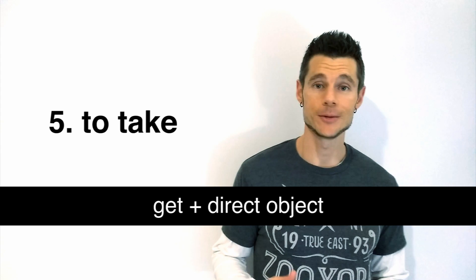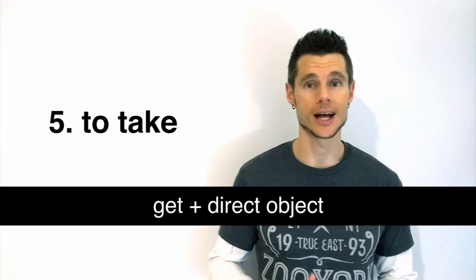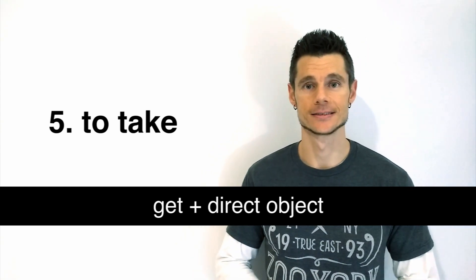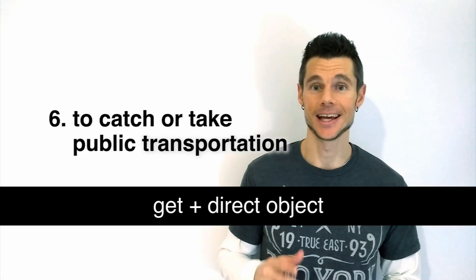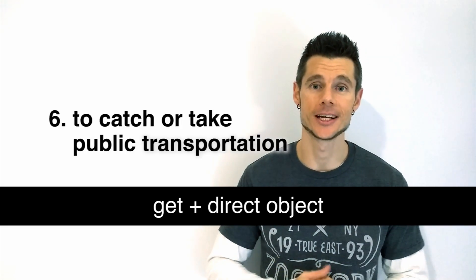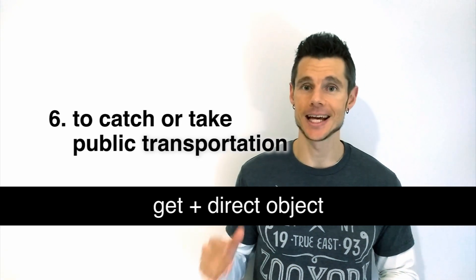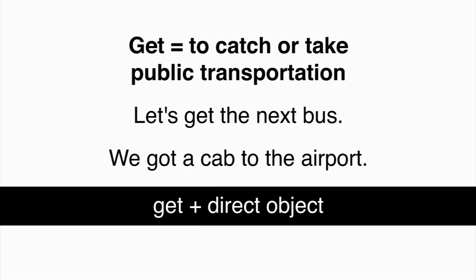GET can mean to take. The structure used is GET plus direct object. He got the last piece of chocolate. Can I get your notes from the class? GET can mean to catch or take public transportation. The structure used is GET plus direct object. Let's get the next bus. We got a cab to the airport.